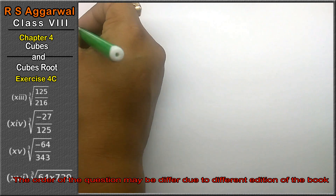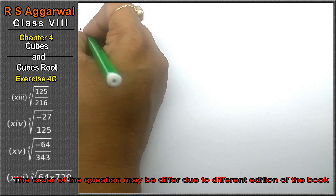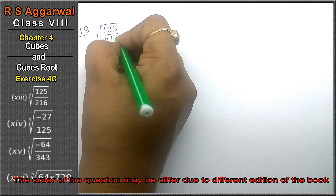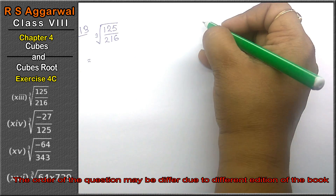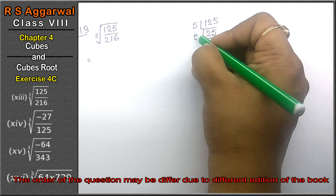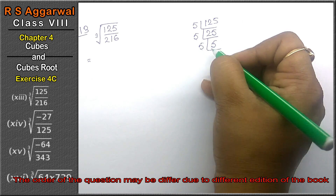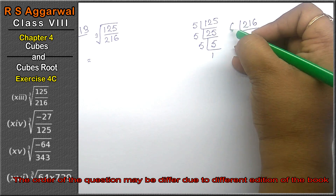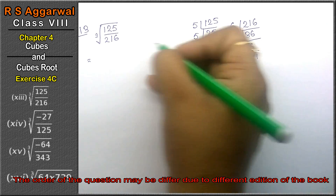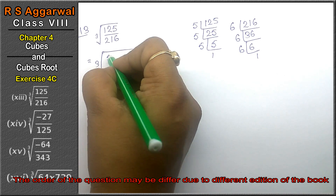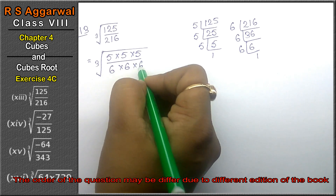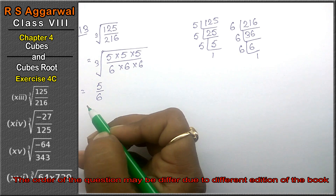Let's do question number 13 of Exercise 4C. Question number 13 is cube root of 125 upon 216. Prime factorization: 125 = 5×5×5 and 216 = 6×6×6. Writing 5×5×5 over 6×6×6, making pairs of 3 and taking one out each. So 5 upon 6 is the answer.